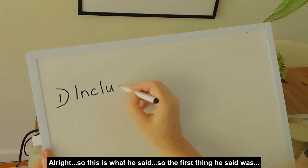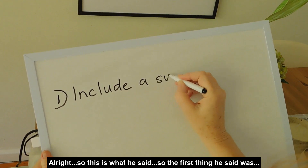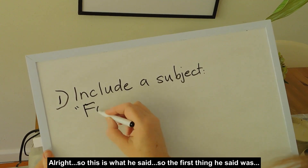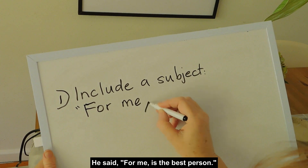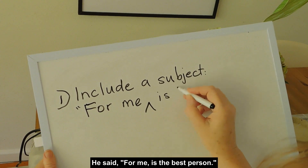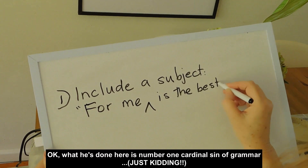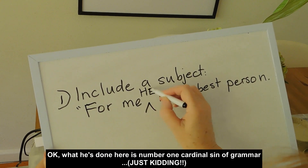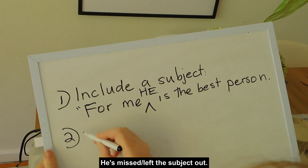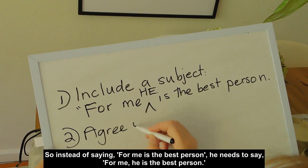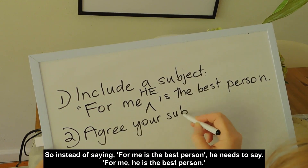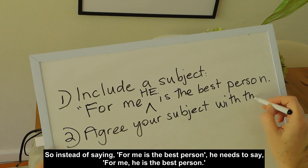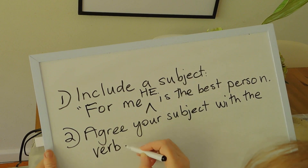All right. So this is what he said. The first thing he said was, 'For me is the best person.' What he's done here is number one cardinal sin of grammar — he's missed the subject out. So instead of saying 'for me is the best person,' he needs to say, 'For me, he is the best person.' He's got to add his subject.